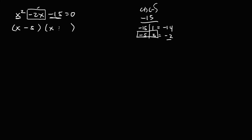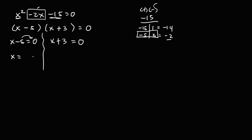So we have (x minus 5)(x plus 3) equals 0. Equating both factors to 0: x minus 5 equals 0 gives x equals 5, and x plus 3 equals 0 gives x equals negative 3.